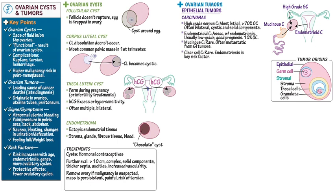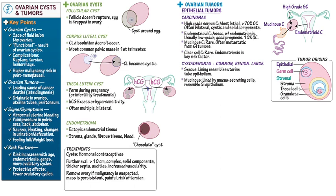Cyst adenomas are common, benign, and large. Serous cyst adenomas are lined by cells that resemble uterine tube epithelium, whereas mucinous cyst adenomas are lined by mucous-secreting cells that resemble gastrointestinal epithelium. Brenner tumors are rare but can be malignant. They comprise transitional cells, sometimes called urothelial cells.